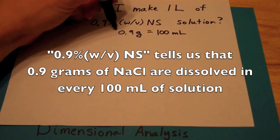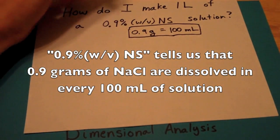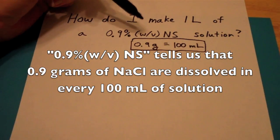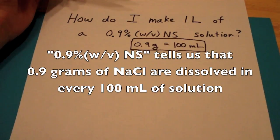So being able to read that in terms of percent, percent is out of 100. We realized that we could write this as a unit conversion, that there's 0.9 grams for every 100 milliliters.